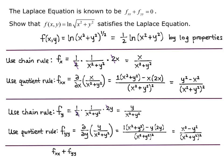Now I add them together. F sub xx plus f sub yy equals y squared minus x squared over the quantity x squared plus y squared squared, plus x squared minus y squared over x squared plus y squared quantity squared. Since they have the same denominator I just add the numerators: a positive y squared and a negative y squared, and a negative x squared and a positive x squared — they cancel each other out, giving 0 over the denominator, which is just 0. So we've shown that f of xy equals the natural log of the square root of x squared plus y squared satisfies the Laplace equation, where the second derivative with respect to x plus the second derivative with respect to y equals 0.